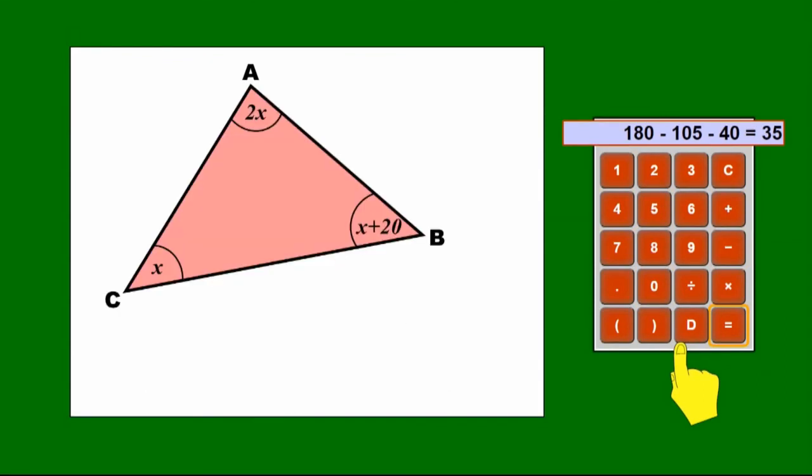And finally, a triangle where all the angles are given as algebraic expressions. But the result still holds true that those three angles added together will total 180 degrees. So we can write that down as an equation. That X plus 2X plus X plus 20 equal 180.